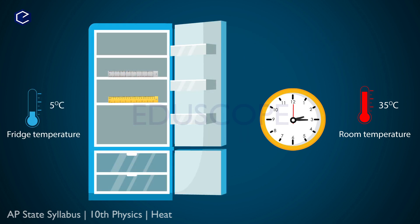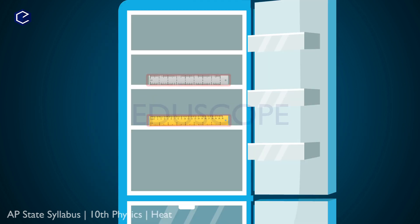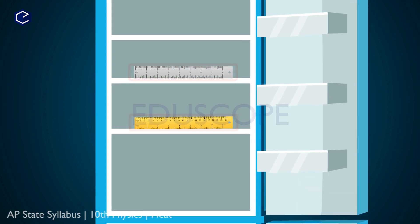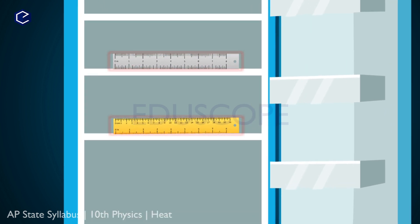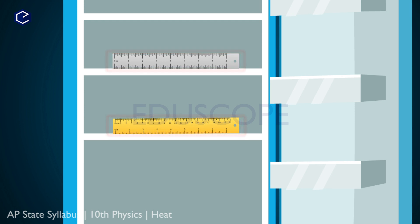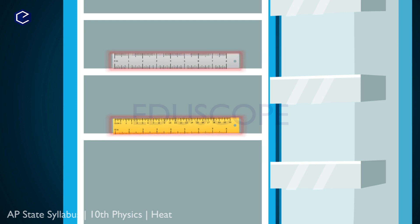What happens to the temperature in the fridge? The scales flow the heat energy into the fridge, so the scales lose heat energy. If an object is cold, the scales become cold.